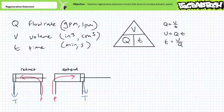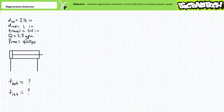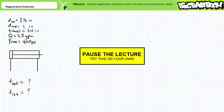Given the disjoint in units, flow rate, volume, and time calculations often necessitate a unit conversion — doubly so when expressing time in seconds. Put your understanding to the test with this introductory example problem: given a cylinder with the following dimensions, calculate the time to fully extend and fully retract the cylinder given a constant flow rate of 2.3 gallons per minute. Pause the lecture and try this on your own.